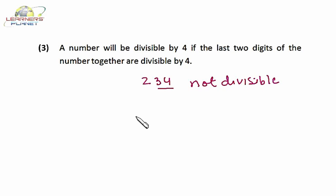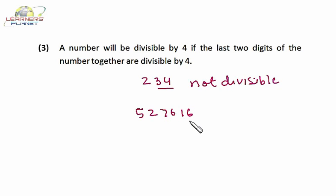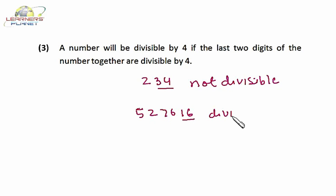Suppose I take another example: 527616. Now just see the last two digits — it's 16. Is 16 divisible by 4? Yes, 16 is divisible by 4. Hence the entire number will be divisible by 4. It doesn't matter about the number of digits in the number.